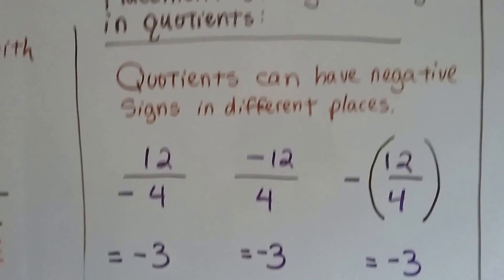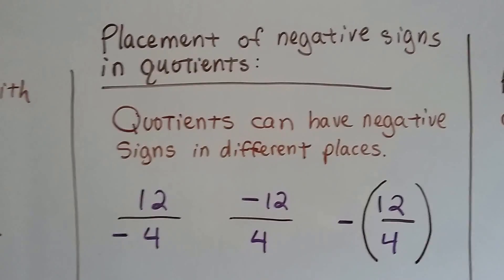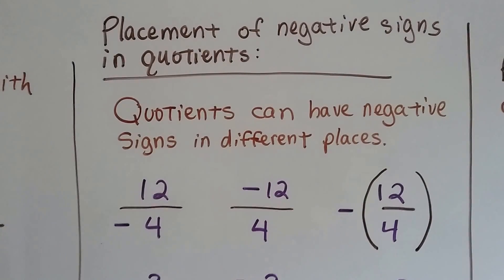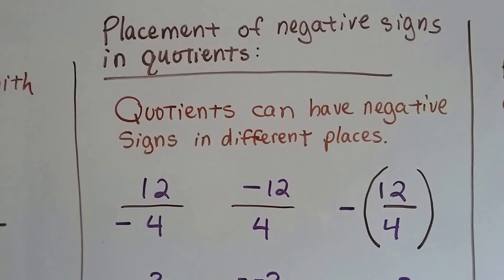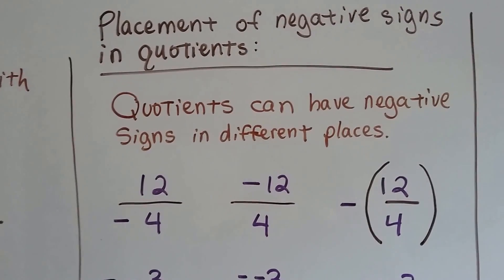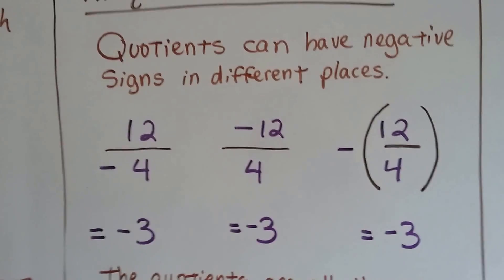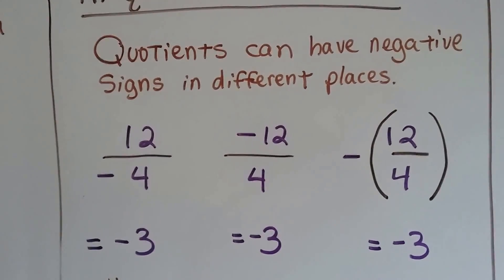The placement of negative signs in quotients - quotients can have negative signs in different places. We've got 12 divided by negative 4, negative 12 divided by 4, and we've got a negative with 12 over 4 in parentheses. They all equal negative 3, all three of these.